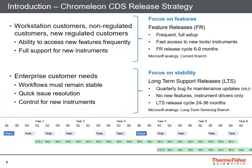Before getting into the content of the latest release, I'll quickly recap the recent changes to the Chromeleon release strategy. The Chromeleon release strategy now has two key branches or streams: a feature release branch and a long-term support branch. The feature release branch is focused on releasing new features and new instrument support quickly into the customer base.